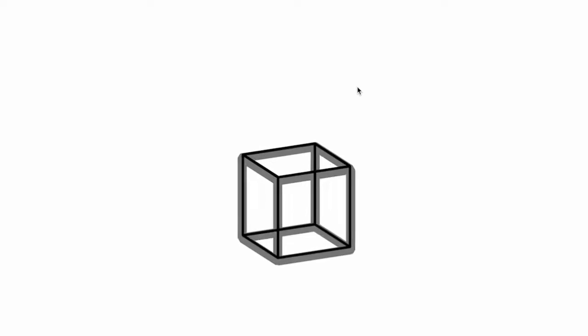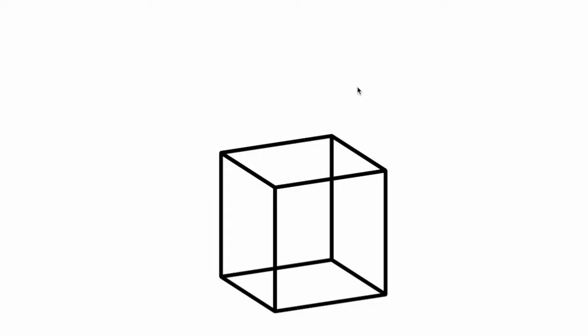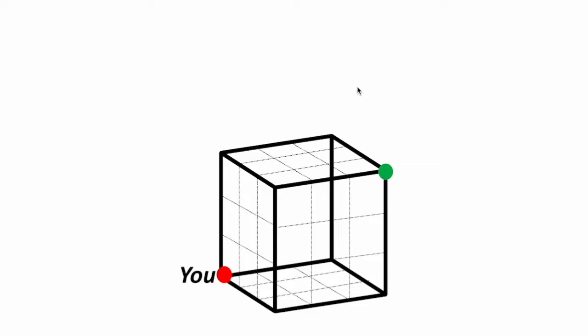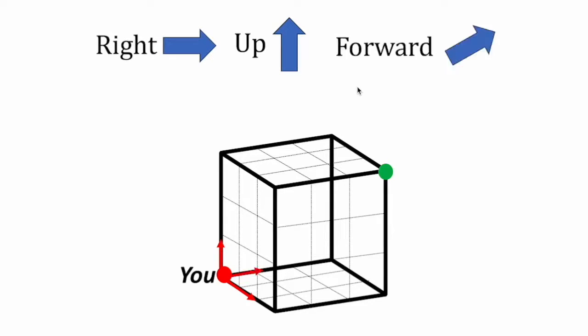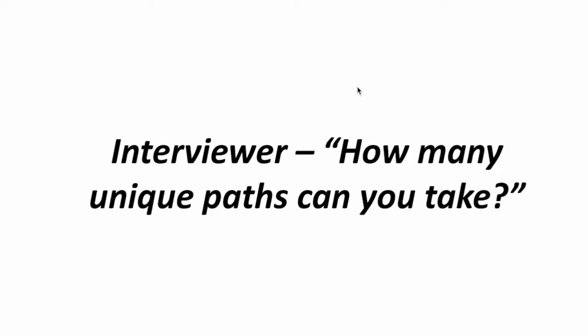There is a cube. You are standing at one corner of the cube, and you want to get to the other end as your destination. In this cube, you can only move in single steps of right, up, and forward. The question is: how many unique paths can you take?